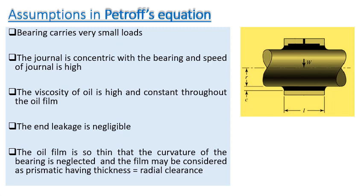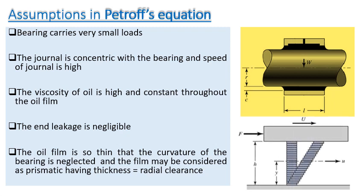The oil film is thin, so the curvature between the bearing and the journal is neglected, and the oil film may be considered as a prismatic one, having a thickness equal to the radial clearance between the journal and the bearing.